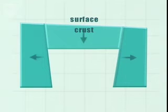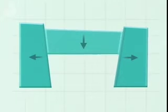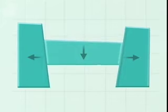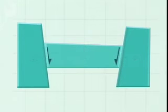During crustal stretching, blocks of crust often subside between parallel normal faults to produce a graben. Here's a simple example.